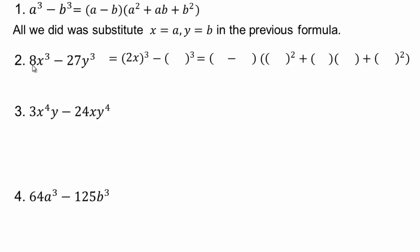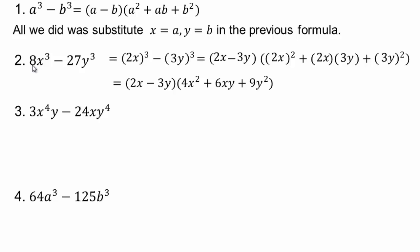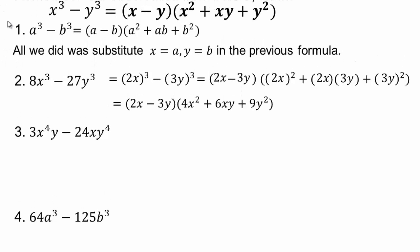This is a difference of cubes, so we write our formula and fill in the blanks. What's the cube root of 8x cubed? That'll be 2x. So 2x goes there, there, and there. Then the cube root of 27y cubed is 3y. So 3y goes there, there, and there. The final answer uses those substitutions. If you don't memorize the formula but remember the first factor is x minus y giving you 2x minus 3y, then: 2x times 4x squared gives 8x cubed.